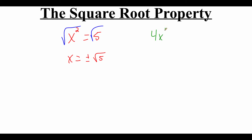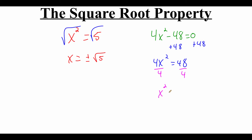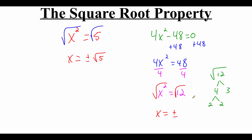Now let's look at another example. Say we have 4x squared minus 48 equals zero. Up to this point we've had x squared equals a number, so we want to get x squared alone. First, add 48 to both sides to get 4x squared equals 48, then divide both sides by 4 to get x squared equals 12. Square rooting both sides gives x equals plus or minus the square root of 12. Since 12 isn't a perfect square, we use a factor tree: 12 is 4 times 3, and 4 is 2 times 2. We have a pair of 2s that come out of the radical, and the 3 stays underneath. So x equals plus or minus 2 root 3.